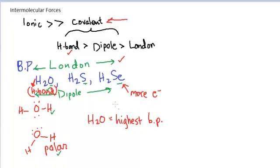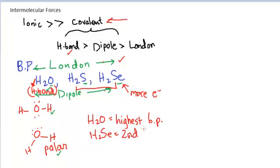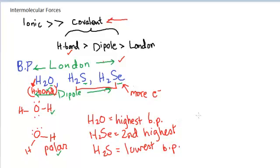Water has the highest boiling point among H₂O, H₂S, and H₂Se. Now comparing the remaining two compounds, which just have London forces and dipole forces, H₂Se has more electrons and therefore the second highest boiling point, and H₂S has the lowest boiling point. Those are some examples of putting compounds in order of boiling point. The same exact technique works for melting points.